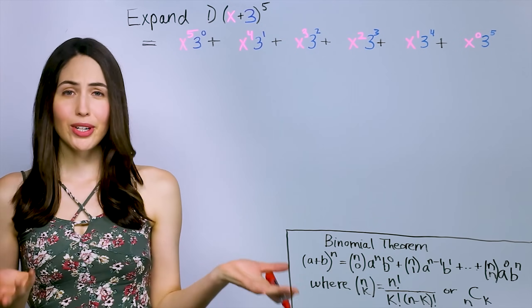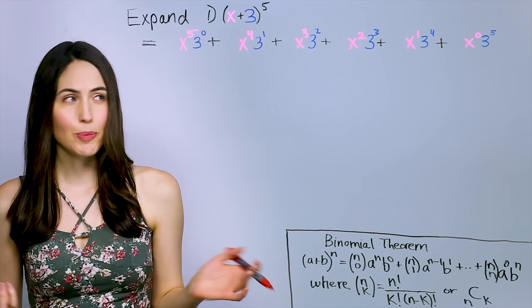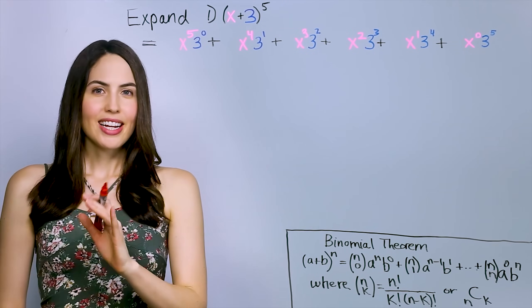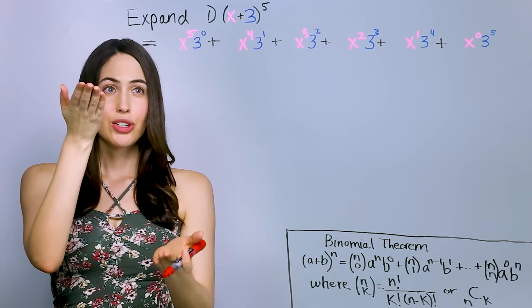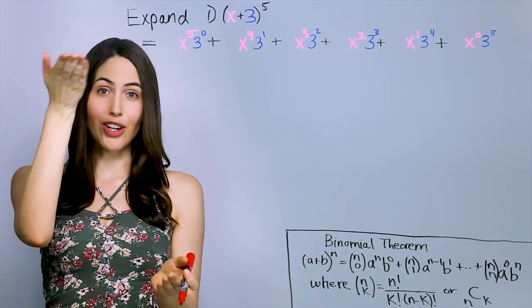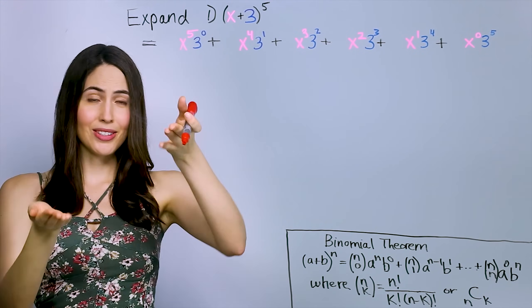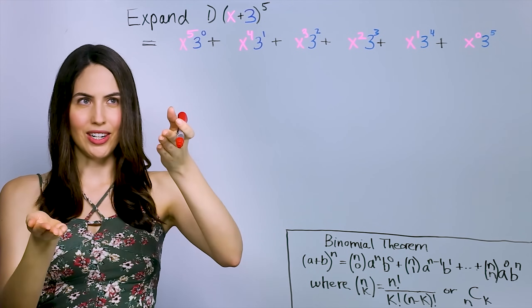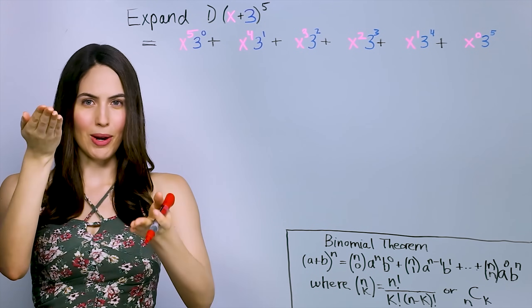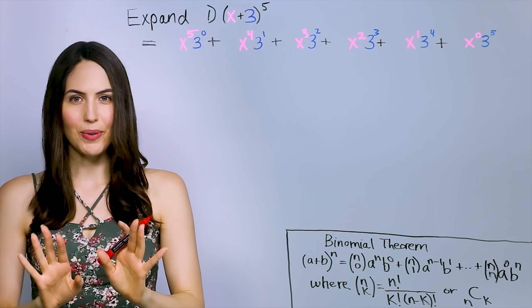Alright, so that's a pretty good start. I mean, you're basically halfway done with your expansion. One thing, notice how these powers are shifting. So the power of x starts high and goes low, the power of 3 starts low and goes high, so they're going in opposite directions. They're shifting one by one though, if you see what I mean.